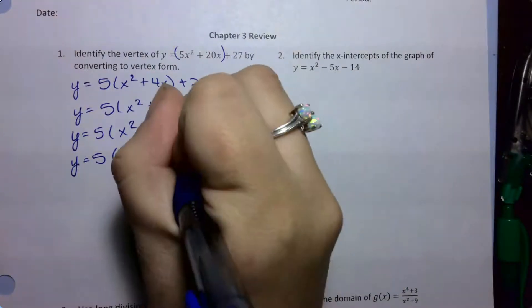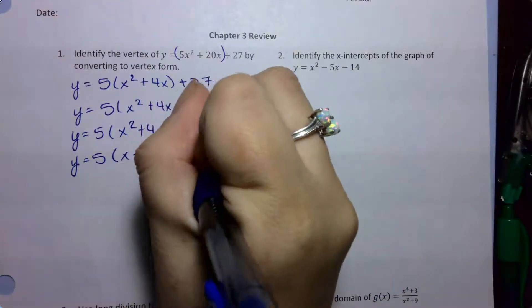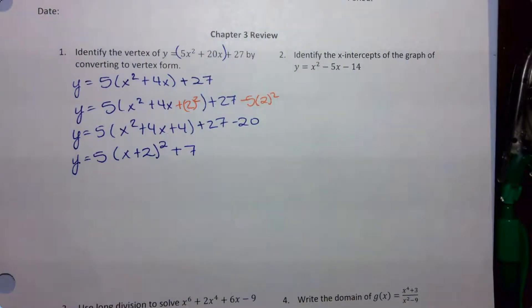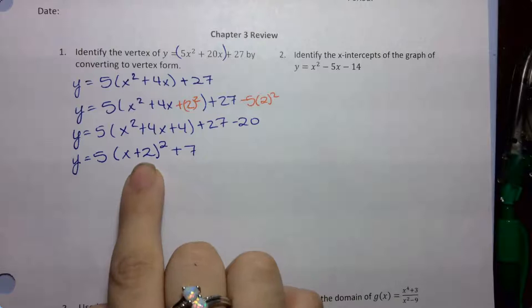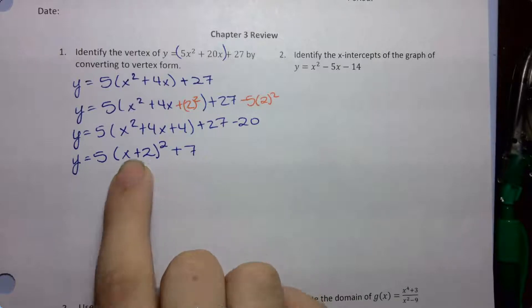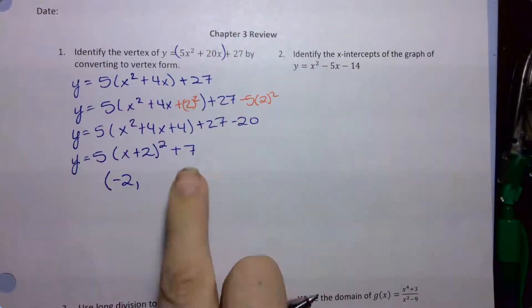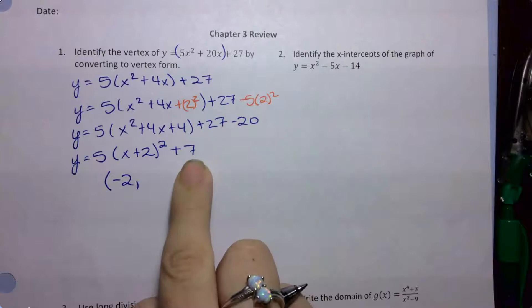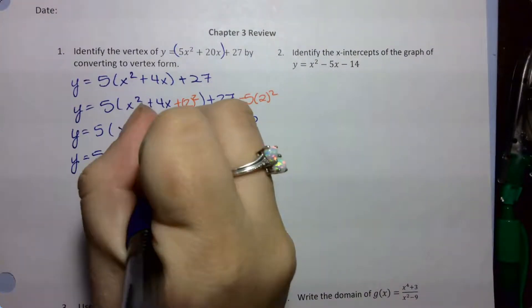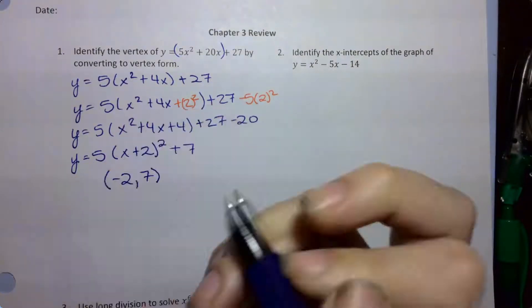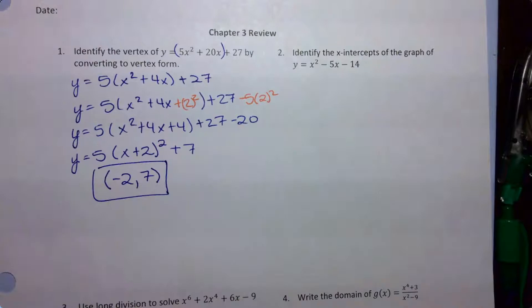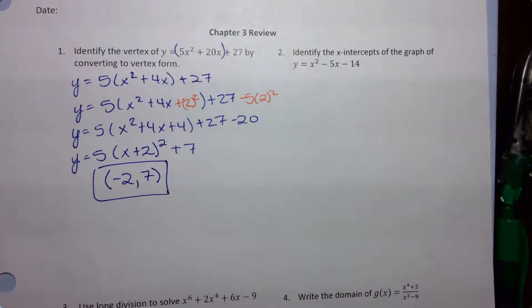27 minus 20 is just 7. So now that this is in vertex form, I have this number here — opposite the sign is the x value of my vertex, so negative 2. This number right here has the same sign as my vertex, so that is 7. So my answer here is negative 2, 7.